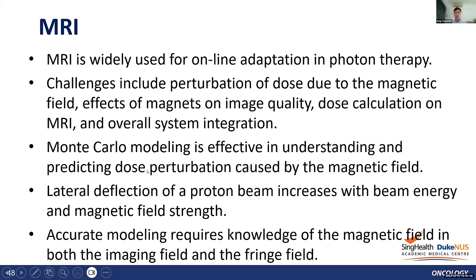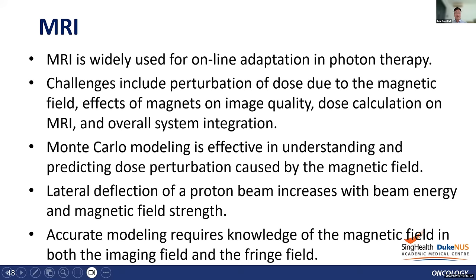Monte Carlo modeling is effective in understanding and predicting dose perturbation caused by the magnetic field. Lateral deflection of the proton beam decreases with increasing beam energy and magnetic field strength. Accurate modeling requires knowledge of the magnetic field in both the imaging field and the fringe field.